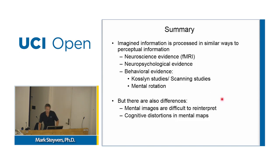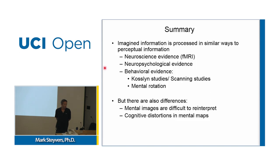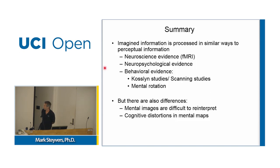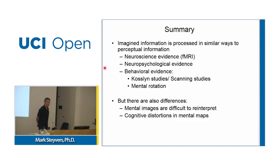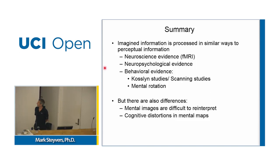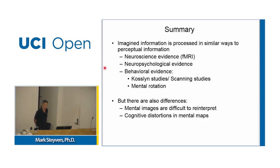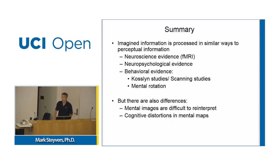To summarize: there is a lot of evidence from neuroscience, neuropsychology, and behavioral experiments that imagined information is similar to perceptual information, but with some differences. Mental images are difficult to reinterpret, more fuzzy, and lack some detail. They can also be distorted by symbolic or more abstract knowledge — your mental maps are not purely analog representations.